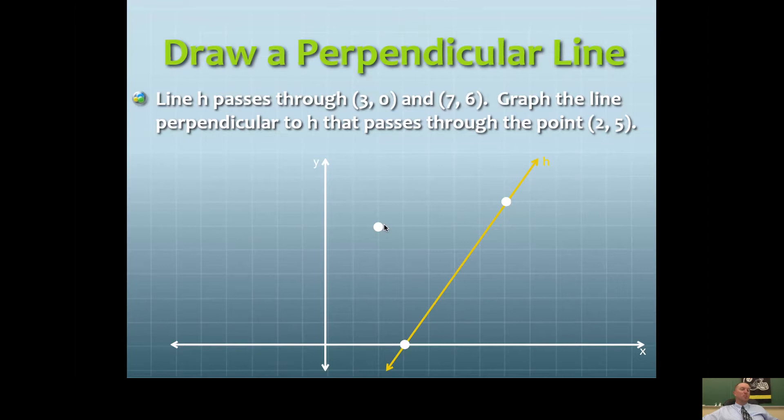Last chapter we had a perpendicular postulate. There's infinitely many lines that go through this point, but how many of them go through this point and are also perpendicular to this line? Just one. That's what the postulate says.